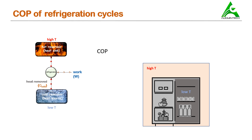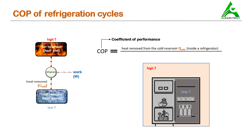Now we are in a position to define COP. Before we do that, COP stands for coefficient of performance. So what is COP? It is the ratio of heat removed from the cold reservoir — which is inside the refrigerator — to the work done to remove the heat. As already mentioned, this work done is the work done by the compressor. So the COP is the ratio of heat removed from the cold reservoir to the work done to remove the heat. Higher the value of COP, better the performance of a system in refrigeration — a high performance system will have a high value of COP.